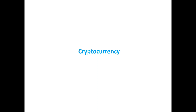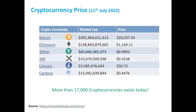Cryptocurrency is a digital currency which runs on a computer network or blockchain. There are popular cryptocurrencies such as Bitcoin, Ethereum, Tether, XRP, Litecoin, and Cardano. These are some popular cryptocurrencies. In the world, there are 17,000 or more cryptocurrencies.